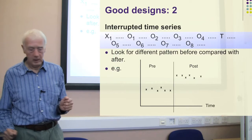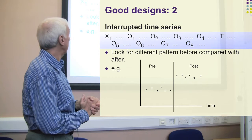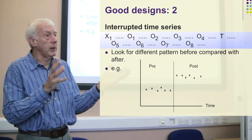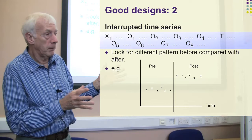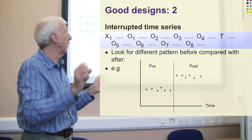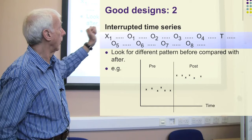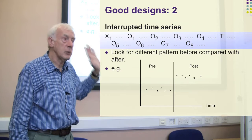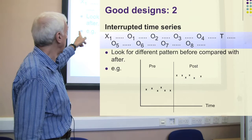A second good design is the interrupted time series. Here, rather than just a couple of observations, we have many observations. We observe the group over time — O1, O2, O3, O4 — then the treatment is given, and then we observe them again — O5, O6, O7, O8 and so on. We have a whole string of observations before and after the treatment point. What we're looking for is a change in the pattern.